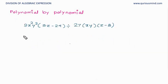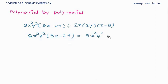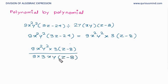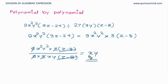Let's take one more example. We find the factors of the dividend: 9x²y². We take 3 as common, giving 3(z − 8) inside. The divisor also contains (z − 8), so we do not need to factorize the divisor. Writing 27 as 9 × 3, we see that (z − 8) cancels, 3 cancels, and 9 cancels. Then x²/x = x and y²/y = y, so the answer is xy.